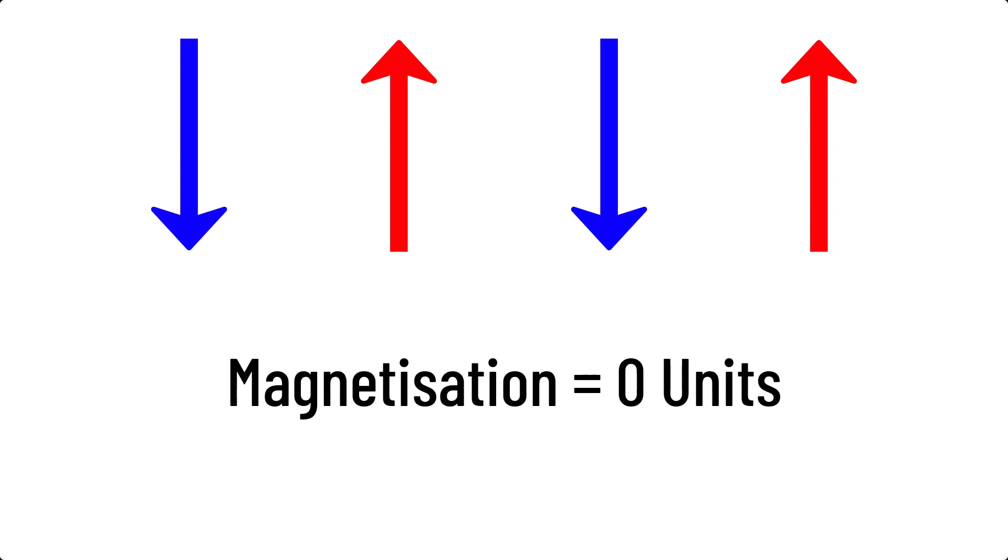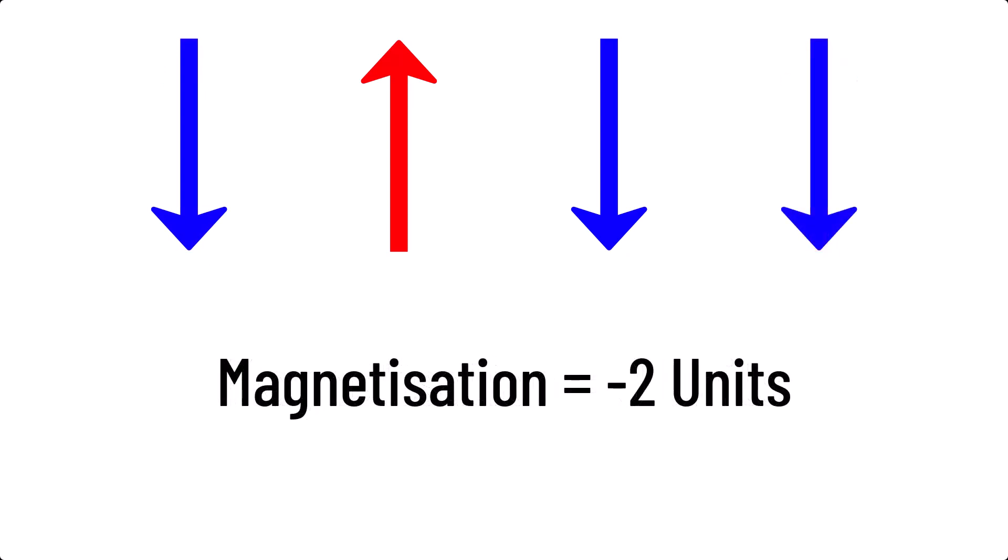Also, if the spins added to give a negative magnetization, such as one up and three down, then we would still call this ferromagnetic, as it has a net spin. They're just pointed opposite to our positive spin, which is just a labeling convention.